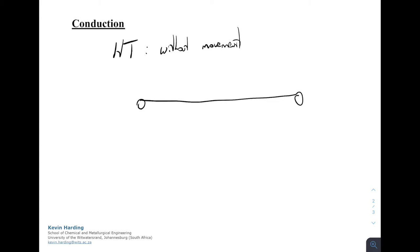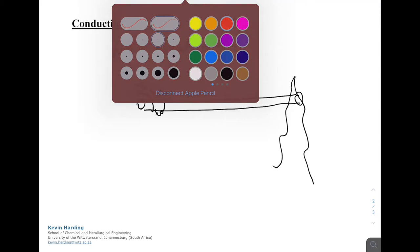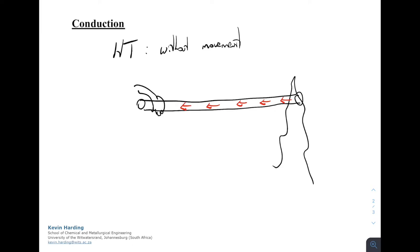For example, if I have a metal pole and I'm holding it on the left side, and I put it into a fire, the heat from the fire will gradually move down the length of this pole until it gets to my hand and I feel it getting hot. This is heat transfer without movement. It always goes from hotter to colder and can happen in solids, liquids, and gases, but remember there's no movement involved.